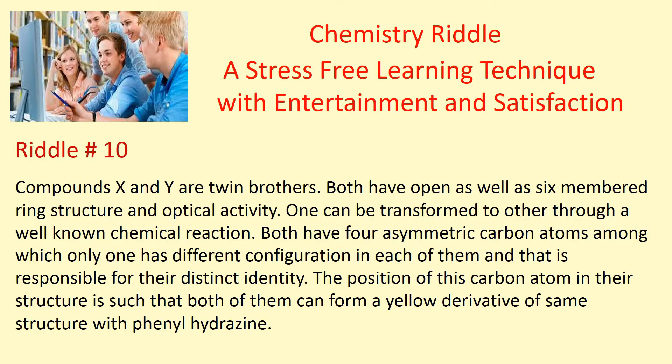Here is reading number 10. Compounds X and Y are twin brothers. Both have open as well as six-membered ring structure and optical activity. One can be transformed to the other through a well-known chemical reaction. Both have four asymmetric carbon atoms, among which only one has different configuration in each of them, and that is responsible for their distinct identity. The position of this carbon atom in their structure is such that both of them can form a yellow derivative of the same structure with phenyl hydrazine.